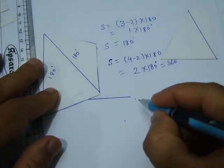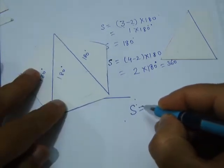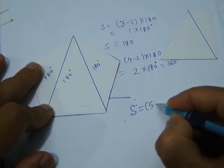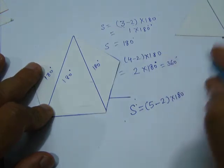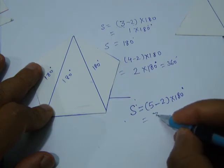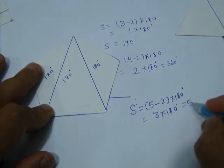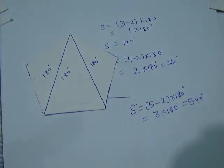Now we can write the sum of angles of a pentagon as (5 - 2) × 180 degrees, since a pentagon has 5 sides. Solving: 5 minus 2 is 3, and 3 × 180 = 540 degrees. So this proves that the sum of all interior angles of a pentagon is 540 degrees.